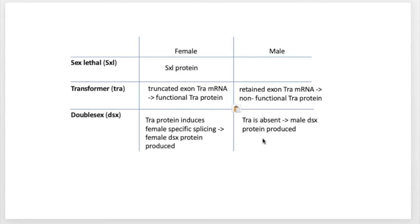I hope you are a little bit mind-blown by that, because it's just extraordinary what happens as a matter of course. All of these things have to go right to produce a male or a female fly. So those annoying little flies flying around your fruit — just take a moment to be amazed by the genetic dance that has to happen to make these guys one sex or the other.